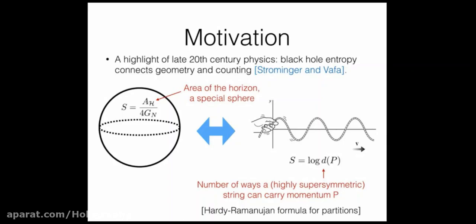One reason that was rather deep and interesting is that it's a relationship between geometry — in particular the area of the black hole horizon, which is a special sphere in spacetime. That's a geometric quantity. On the other hand, there's a counting problem, which in this correspondence gives the entropy.